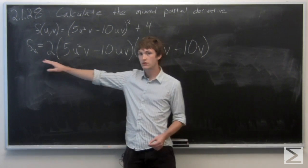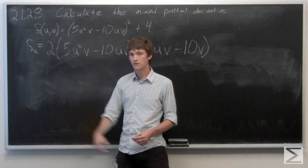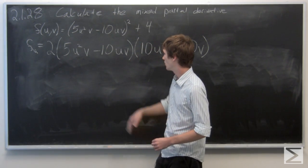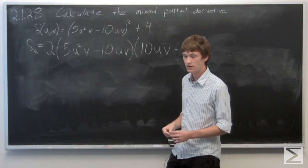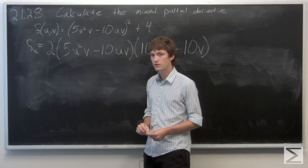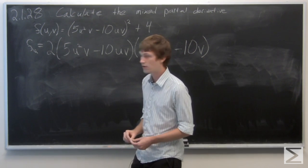So now we're going to take the partial derivative with respect to v next. We see that there are a lot of terms that have v in them. So let's pull them out of the terms so that we can just calculate it all at once.